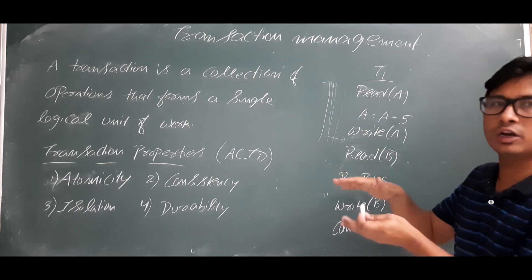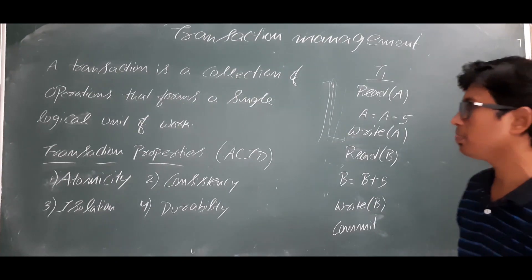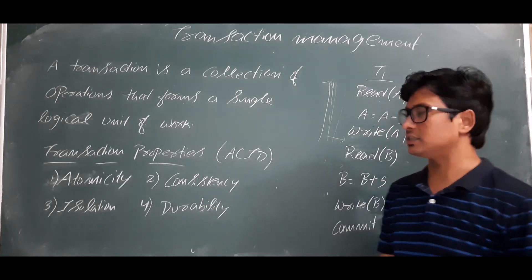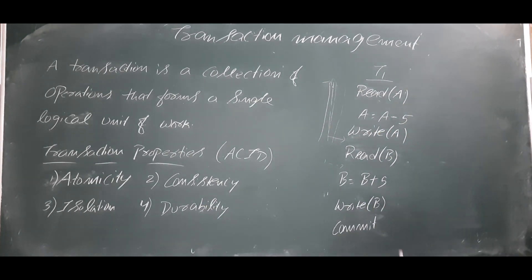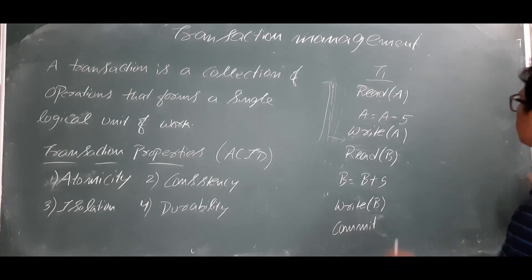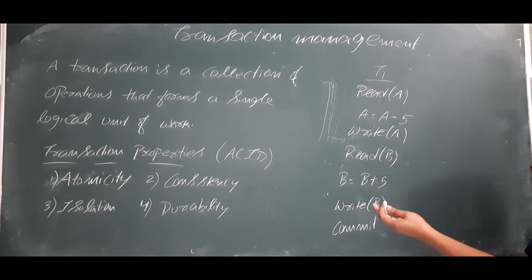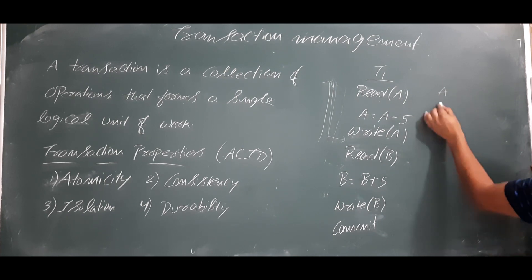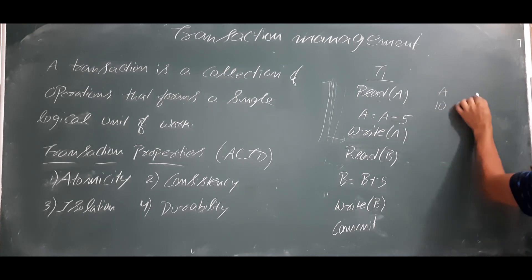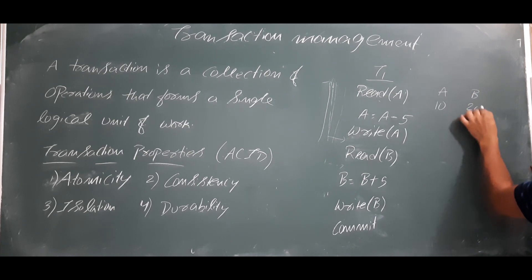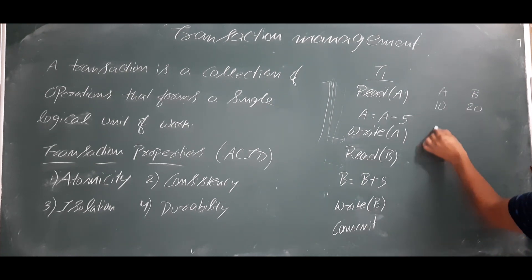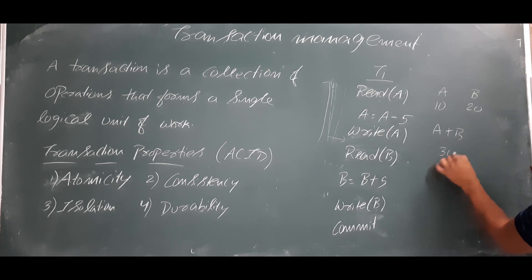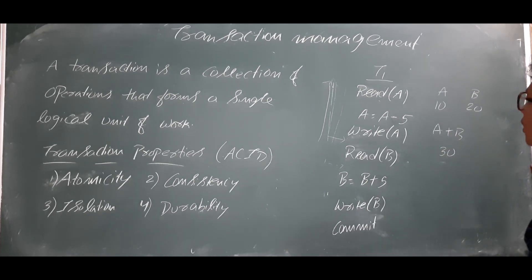Consistency says that whatever modifications you are doing should be consistent. Let me give a small example: suppose A is initially 10 and B is 20. If I compute A plus B, I get 30. Now I start executing this transaction.